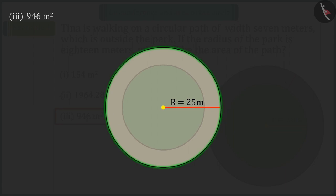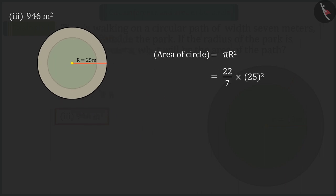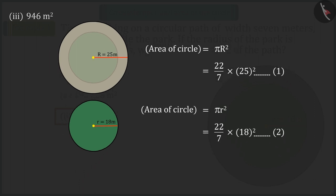First, we find the area of the whole circle, which is represented by equation 1. Similarly, find the circle with area of the park, which is represented by equation 2. Since we have to find the area of the path.